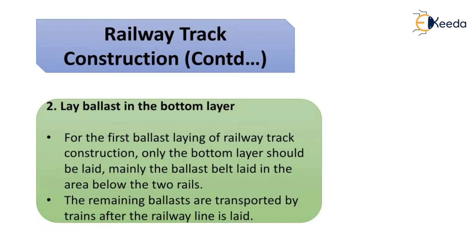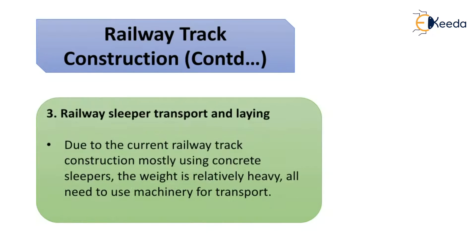The first step is the laying of ballast in the bottom layer for the post-ballast laying of the railway track construction. Only the bottom layer should be laid — mainly the ballast belt laid in the area below the two rails. The remaining ballast is transported by chains after the railway line is laid.